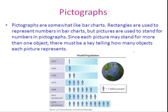Pictographs are somewhat like bar charts. Rectangles are used to represent numbers in bar charts, but pictures are used to stand for numbers in pictographs. Since each picture may stand for more than one object, there must be a key telling how many objects each picture represents. In this one, each little person represents one billion people.